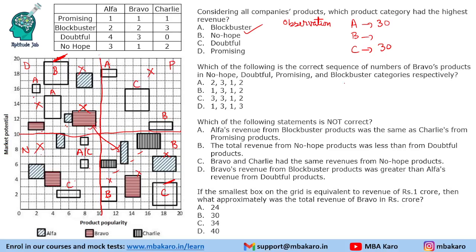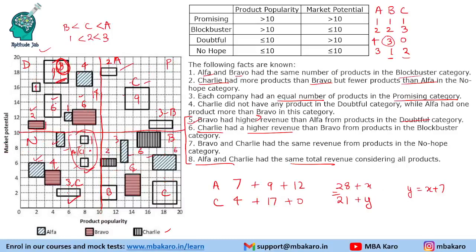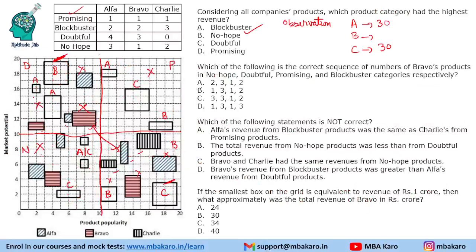Question 2: What is the correct sequence of numbers of Bravo products in the categories No Hope, Doubtful, Promising, and Blockbuster? From our table: No Hope = 1, Doubtful = 3, Promising = 1, Blockbuster = 2. The answer sequence is 1, 3, 1, 2.